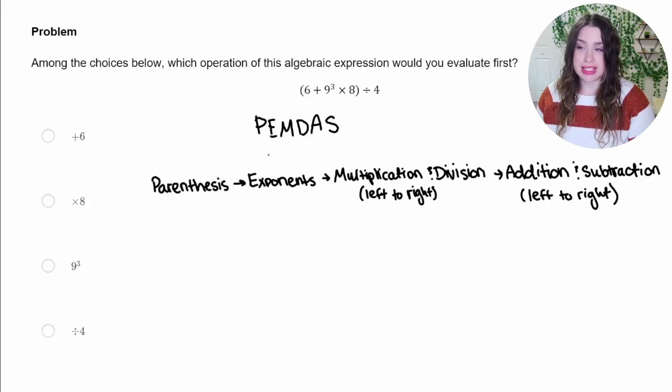So PEMDAS stands for parentheses, exponents, multiplication and division from left to right, and then addition and subtraction from left to right. So we need to make sure that if there's any parentheses, we start with that first, which there is.